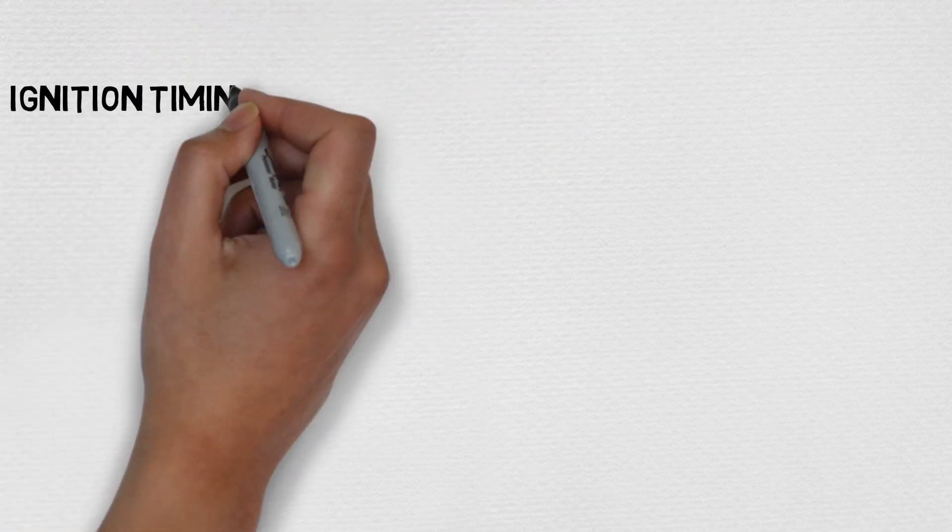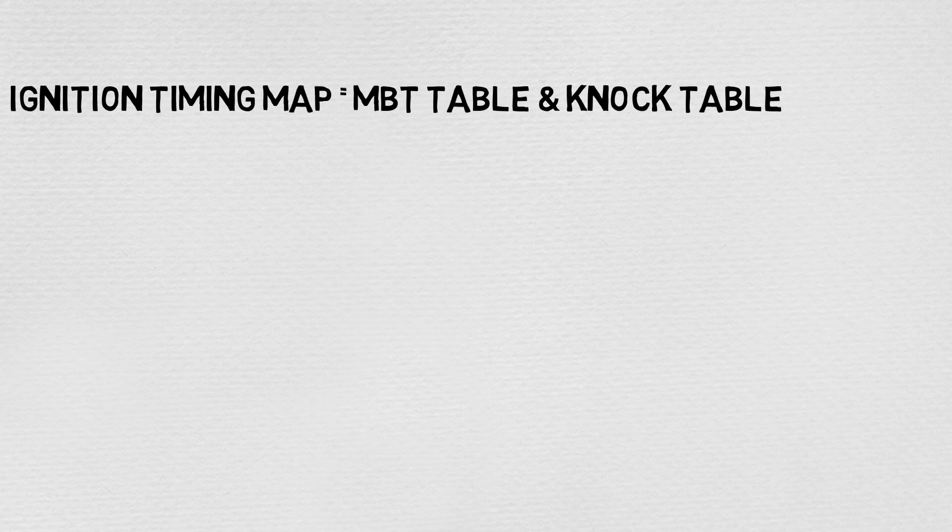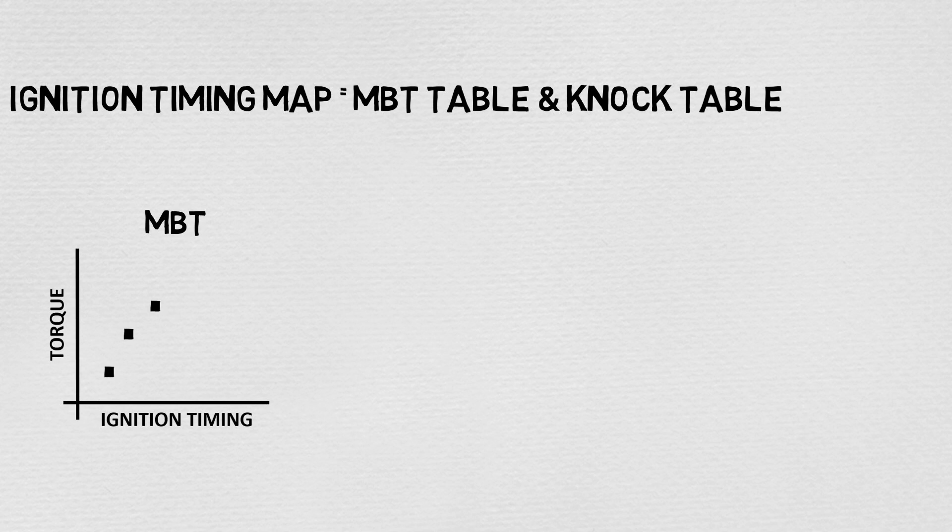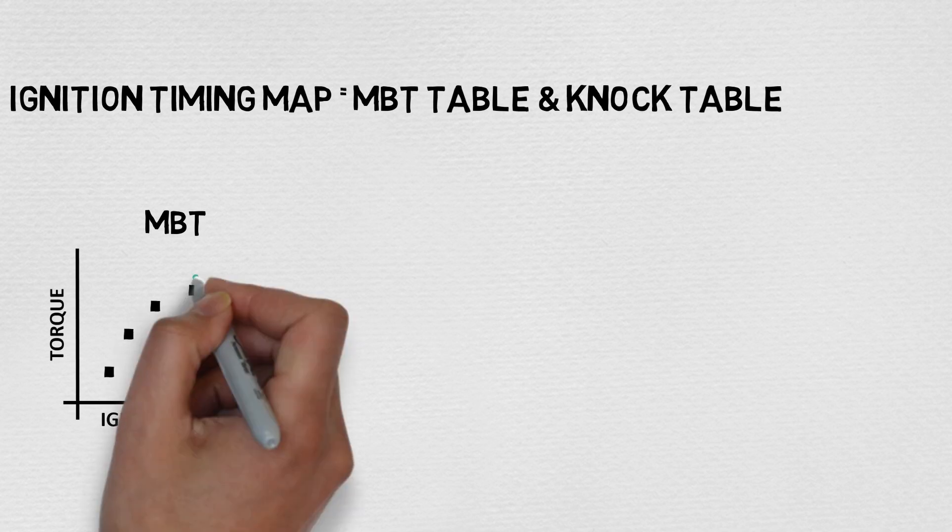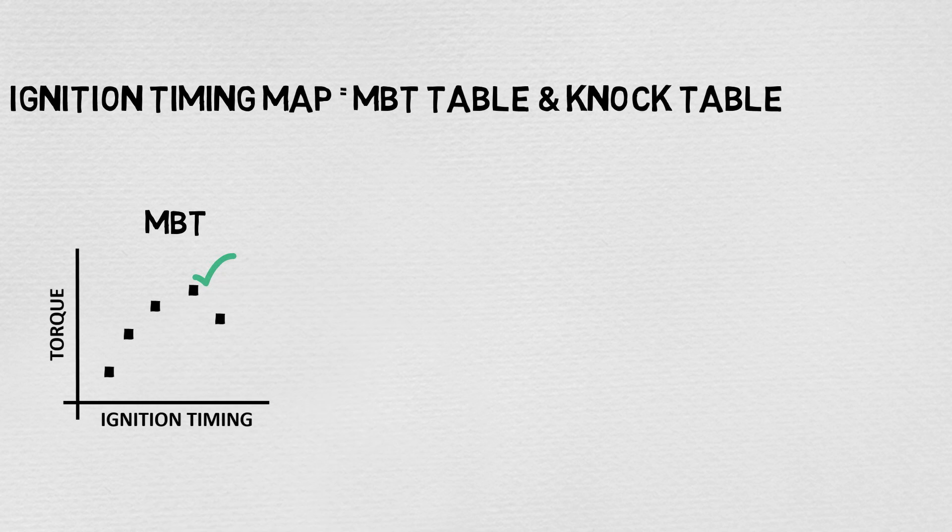A typical ignition timing map is composed of two combined tables, an MBT map and a knock map. For the MBT map, calibrators compare the relationship between spark timing and torque until they find the value that generates the best performance.